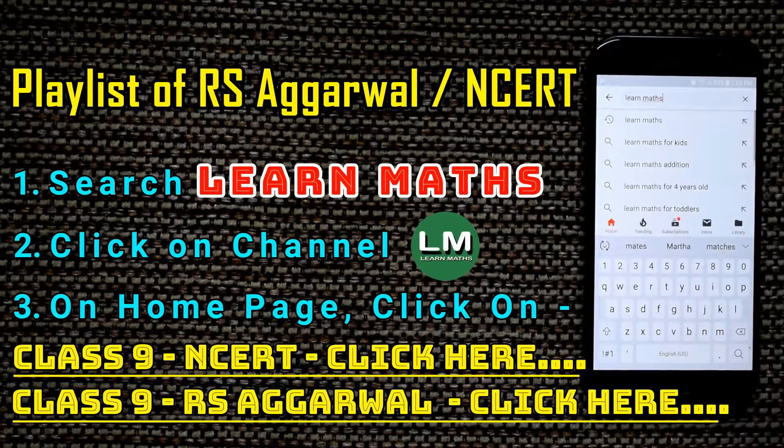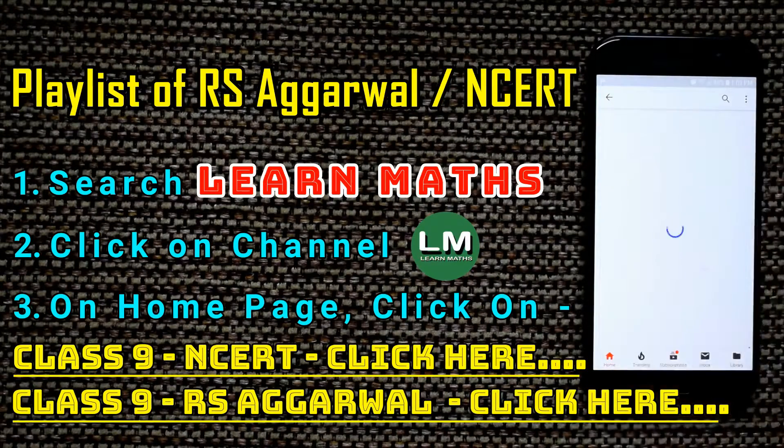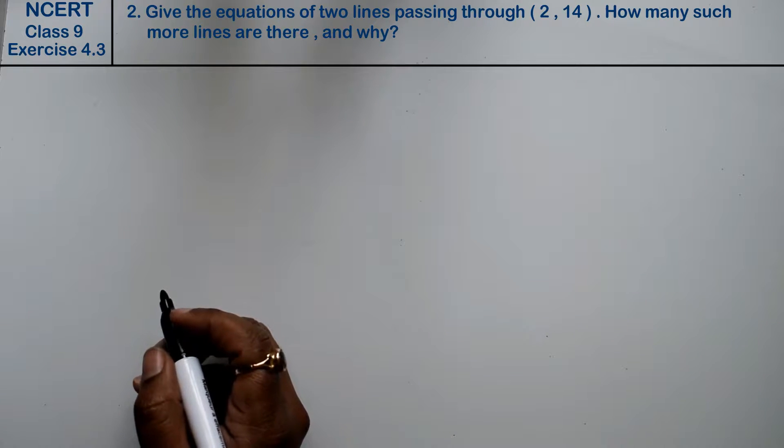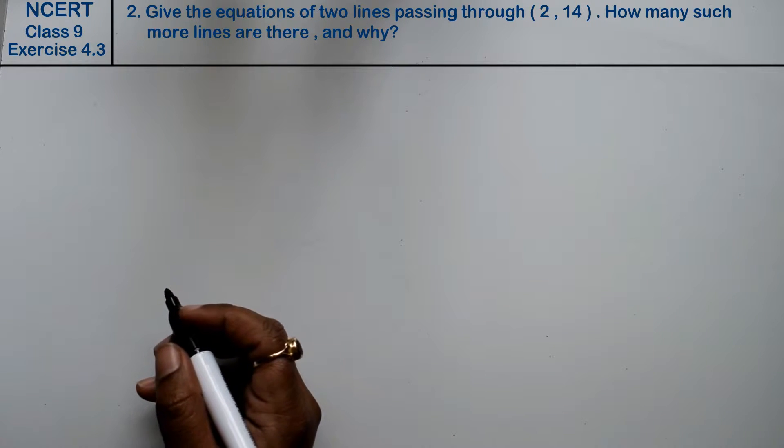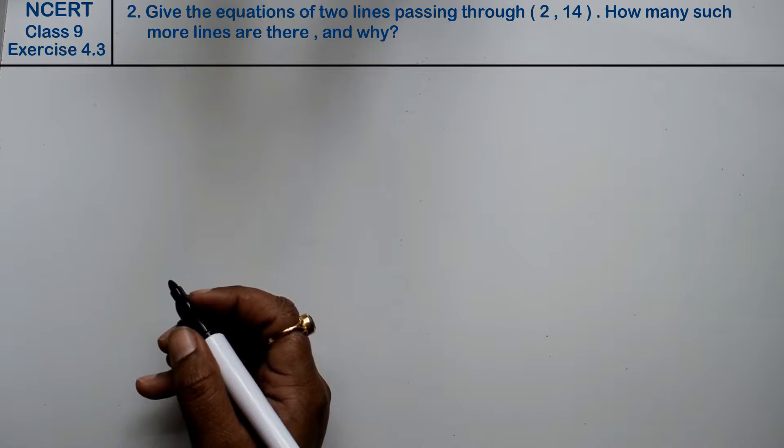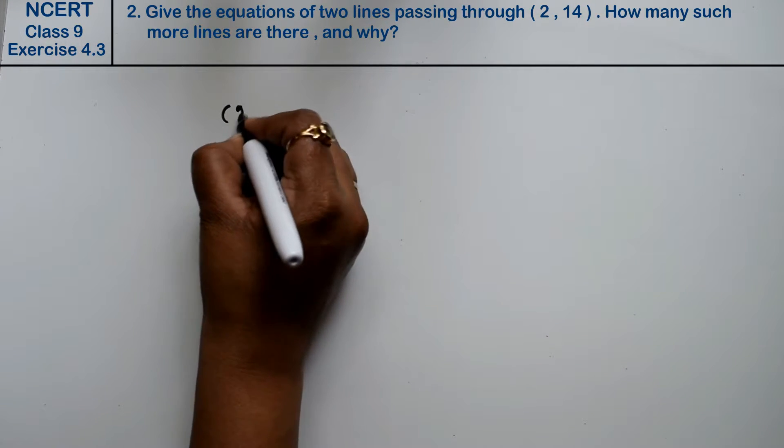Let's do question number 2 of exercise 4.3, that is linear equations in 2 variables. Question number 2 is: give the equation of 2 lines passing through (2, 14).